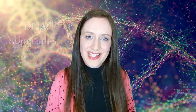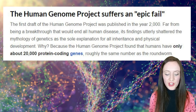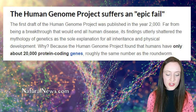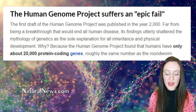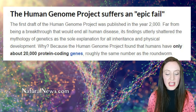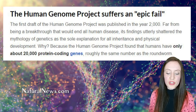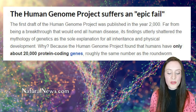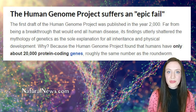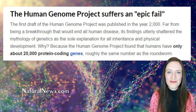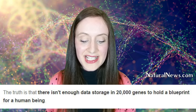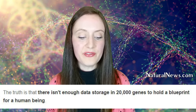Let's look at some more information about DNA. This is from Mike Adams at naturalnews.com: 'The Human Genome Project suffers an epic fail.' The first draft of the Human Genome Project was published in the year 2000. Far from being a breakthrough that would end all human disease, its findings utterly shattered the mythology of genetics as the sole explanation for all inheritance and physical development. Because the Human Genome Project found that humans have only about 20,000 protein-coding genes — roughly the same number as a roundworm. There isn't enough data storage in 20,000 genes to hold a blueprint for a human being.